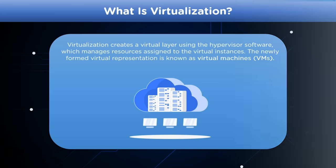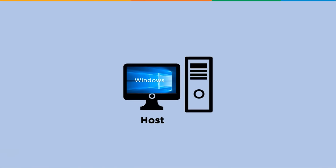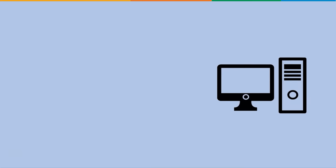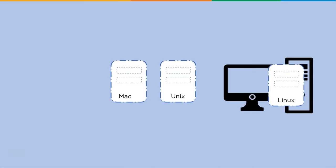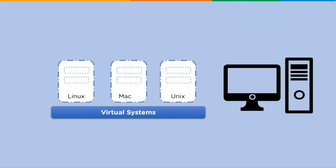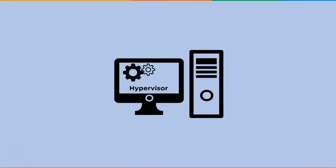For example, consider a system installed with the Windows operating system, officially known as the host OS, where the virtualization software known as the hypervisor will run. Using the hypervisor software, we can have multiple instances of different operating systems including Unix, Mac, and Linux, which are known as virtual systems or guest OS. The working of virtualization is only possible through software known as a hypervisor.